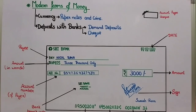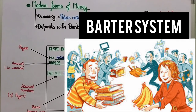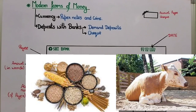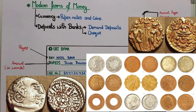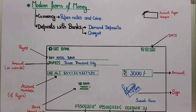Without wasting more time, let's recap. In the last video session we covered all the points in this chapter. We studied about the barter system of exchange, and we also started the topic of modern forms of money. We studied that when money was not introduced, there was a barter system of exchange. In India, grains and cattle were used as money. After that, we introduced metallic coins — gold, silver and copper coins — made from precious metals.